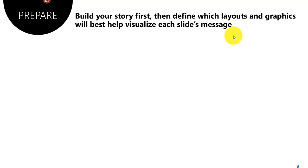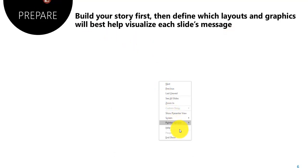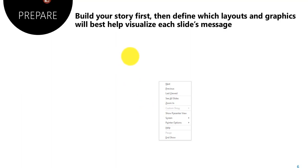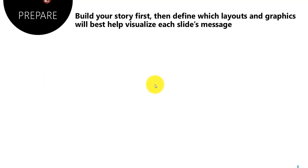To exit the slideshow, press Escape on your keyboard, or right-click and select End Show — you can also press E while the right-click menu is showing. Any underlined letter in the right-click menu can be pressed as a shortcut. You can also go to Pointer Options and Arrow Options to always keep your mouse pointer visible so it doesn't disappear.